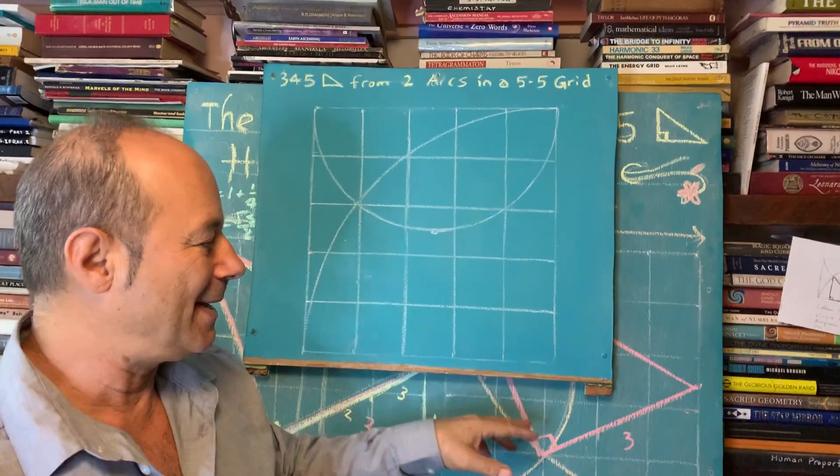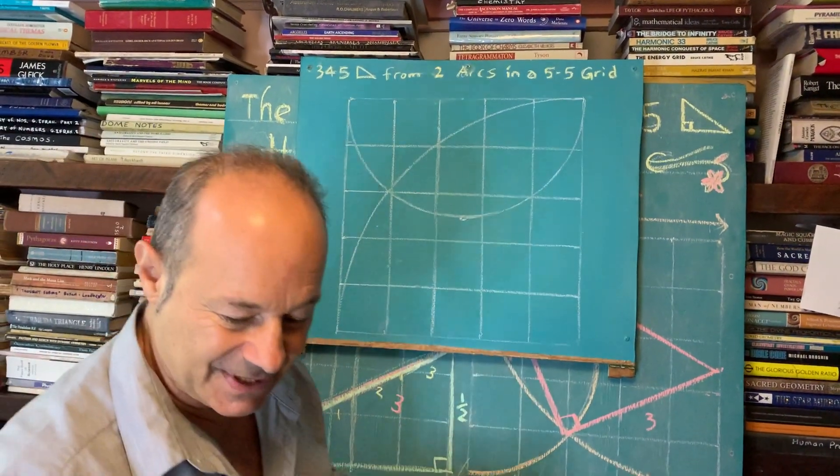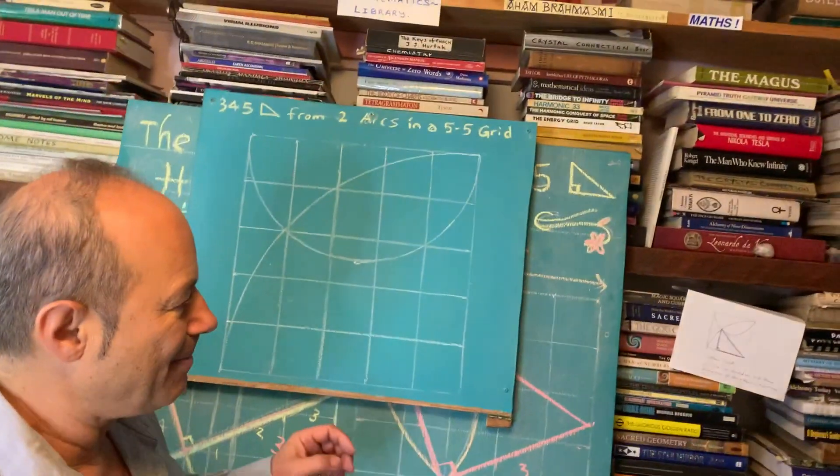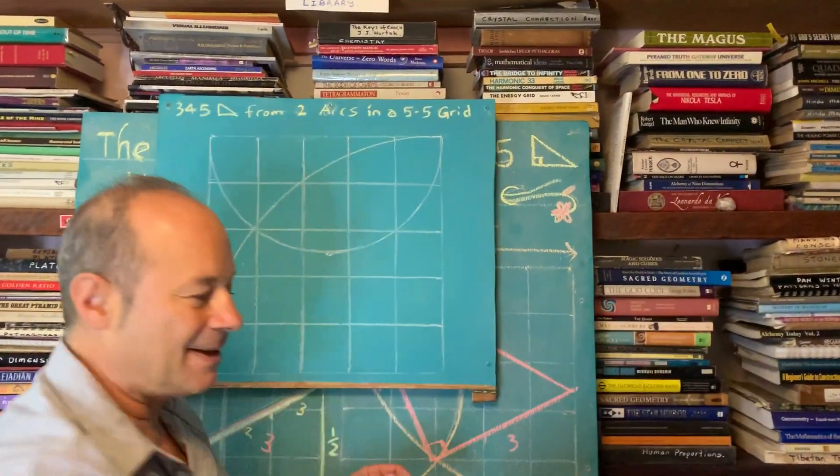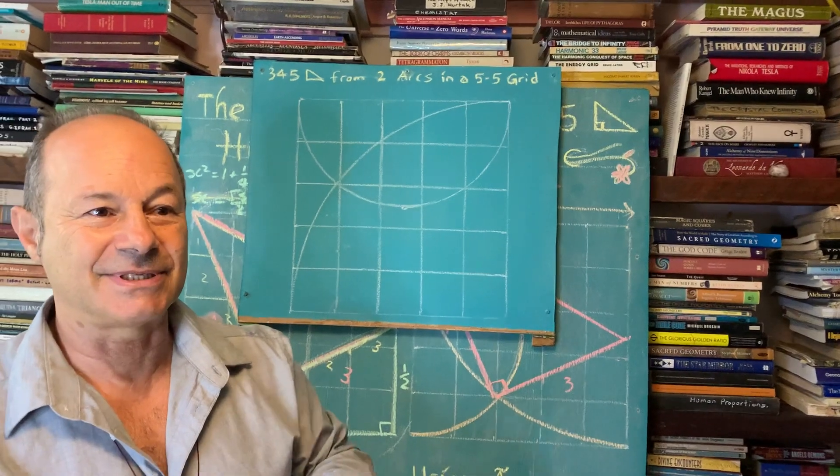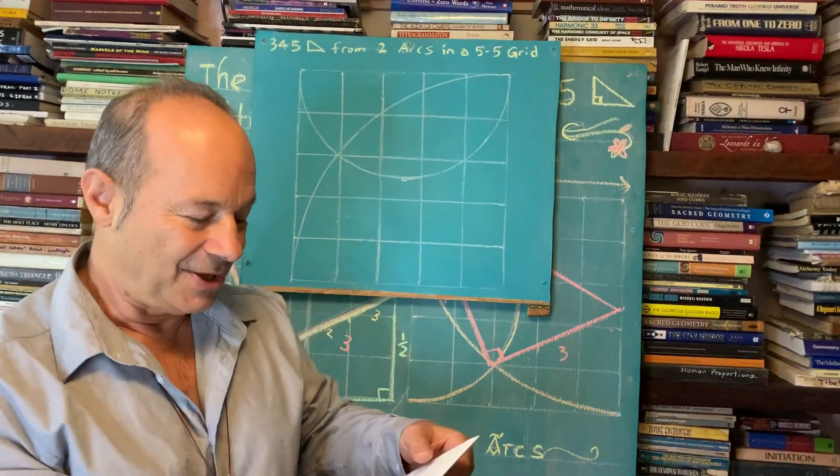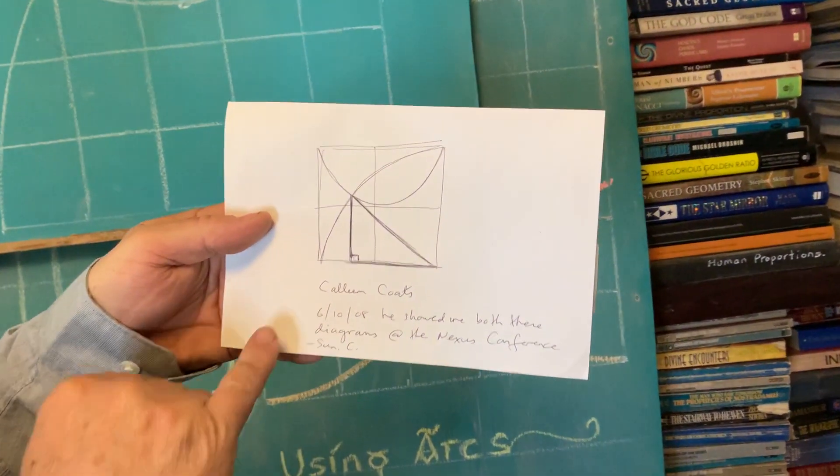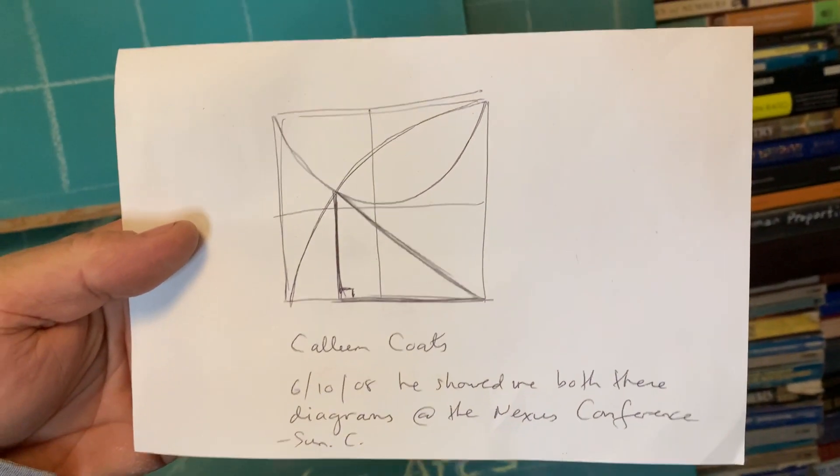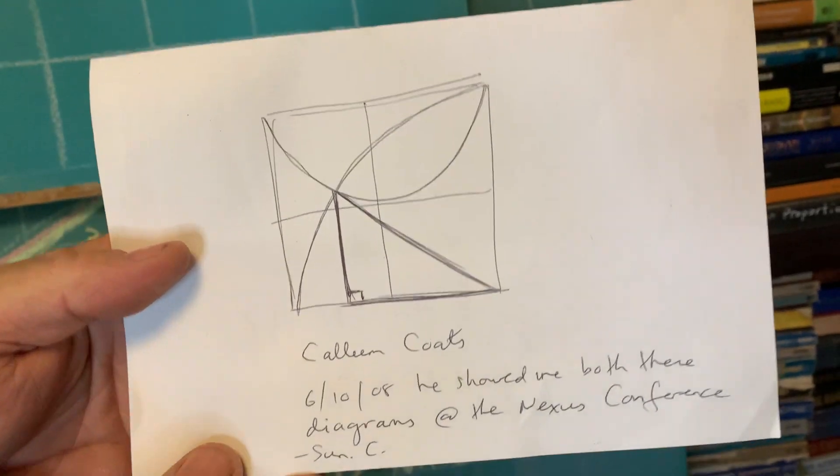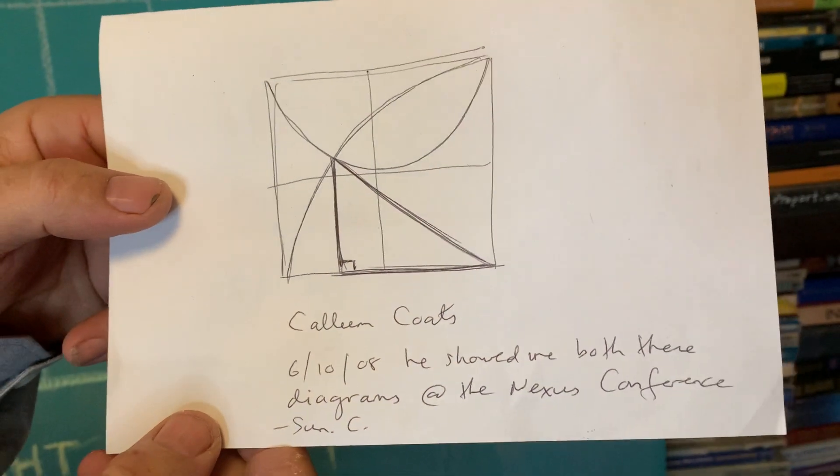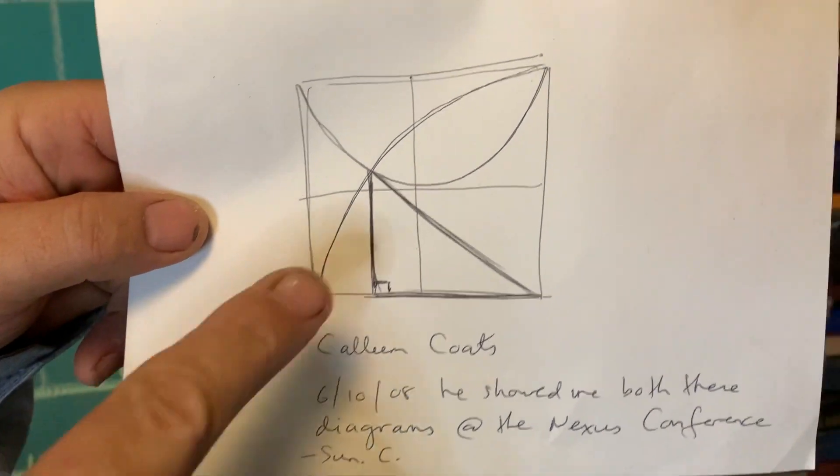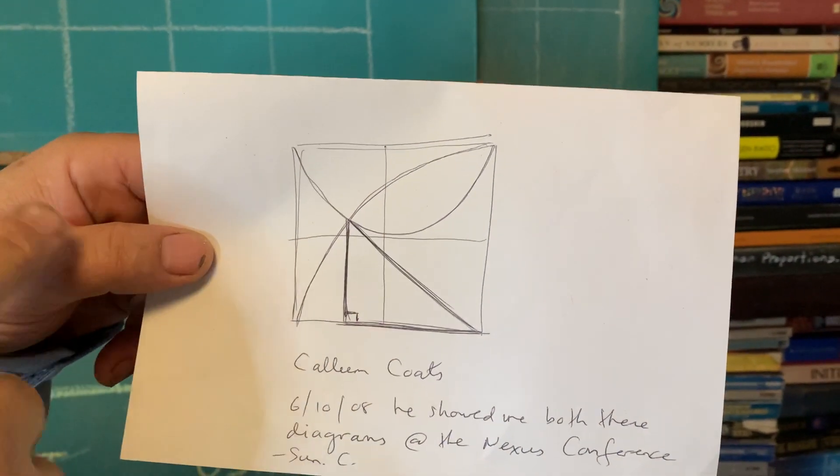This version that I'm going to show you is actually a bit more elegant than what we've done, and this was given to me by my friend Callum Coats. When I was teaching at a Nexus conference in Sunshine Coast, Australia in 2008, I'm with my friend Callum Coats - he's a high level architect and professor - and we're having a coffee together and scribbling on napkins, geometries.